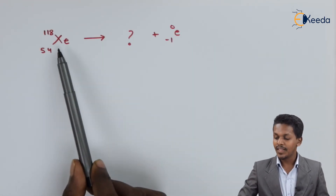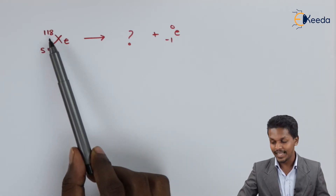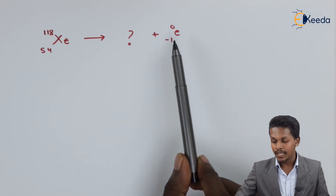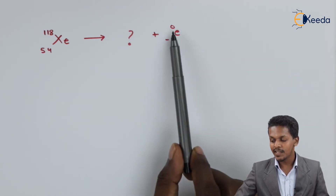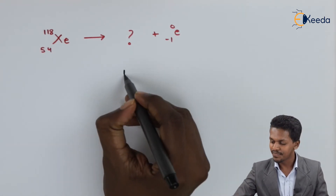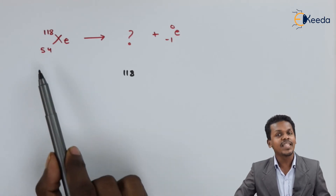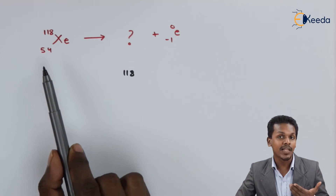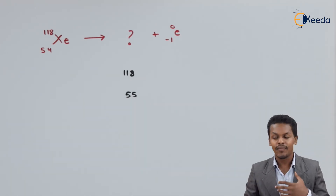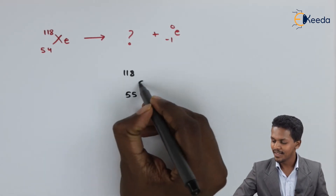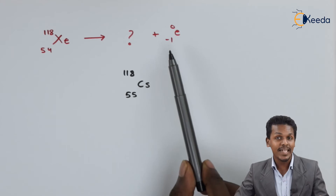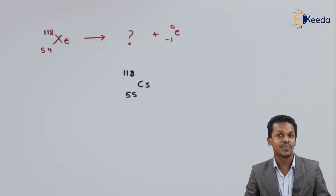Here is another example: Xenon-54 with atomic mass number 118 undergoes beta decay. The beta particle is eliminated. Since the electron has almost negligible mass, the product has the same atomic mass number of 118. The atomic number is increased by 1 unit — 54 plus 1 equals 55. Atomic number 55 belongs to Cesium. So whenever Xenon undergoes beta decay, we get the formation of Cesium.